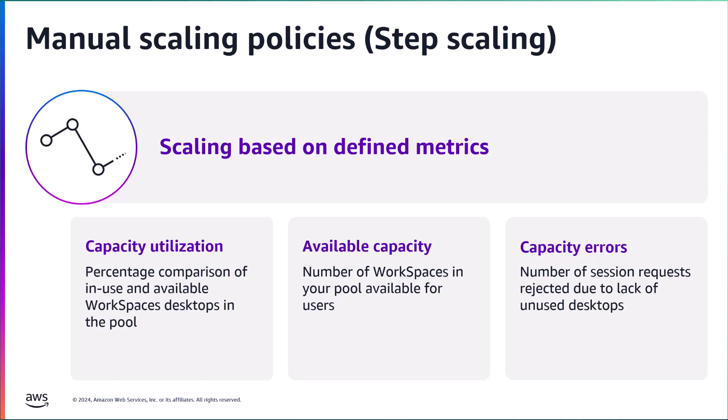The last metric available is capacity errors, which represents the number of session requests rejected due to lack of capacity. You can use this metric to provision new instances for users who can't start streaming sessions due to the lack of capacity. This is a completely reactive approach to scaling and will result in users waiting for new instances to provision before they can begin a session.